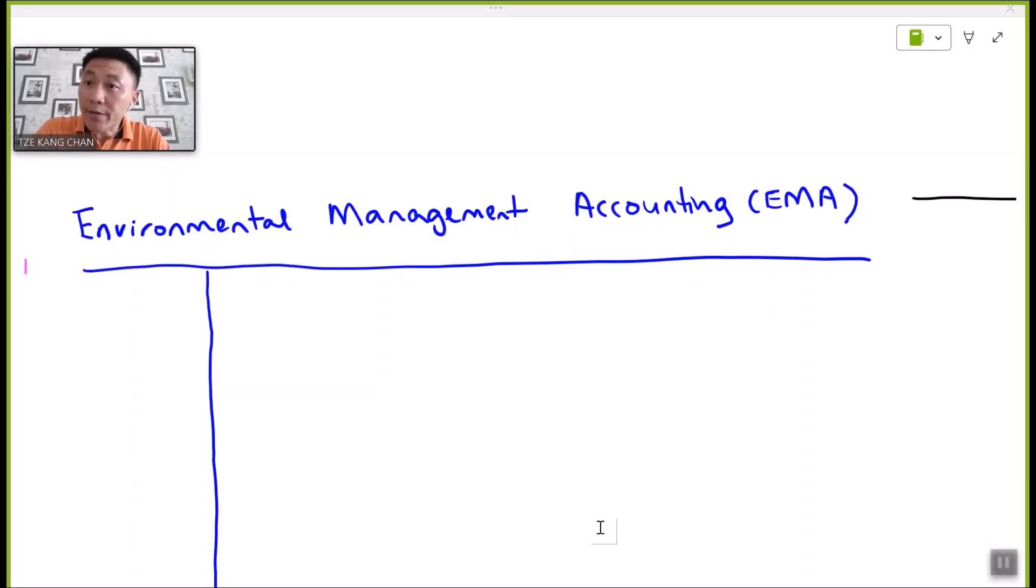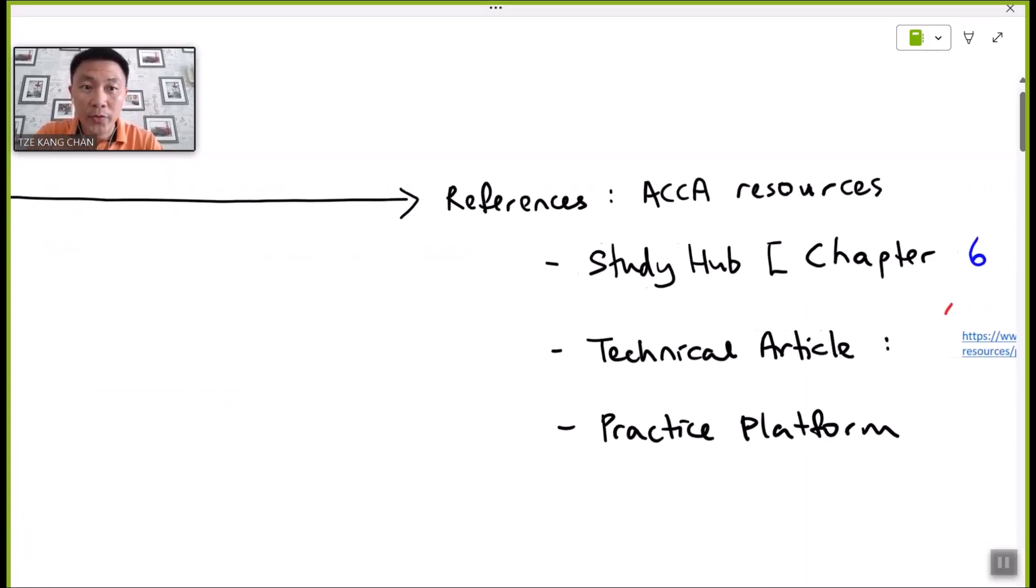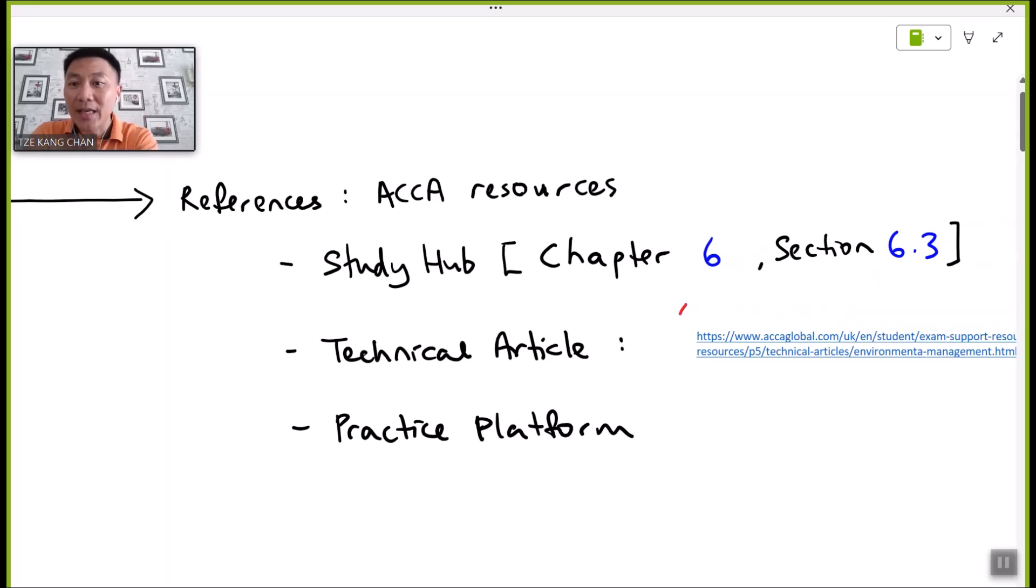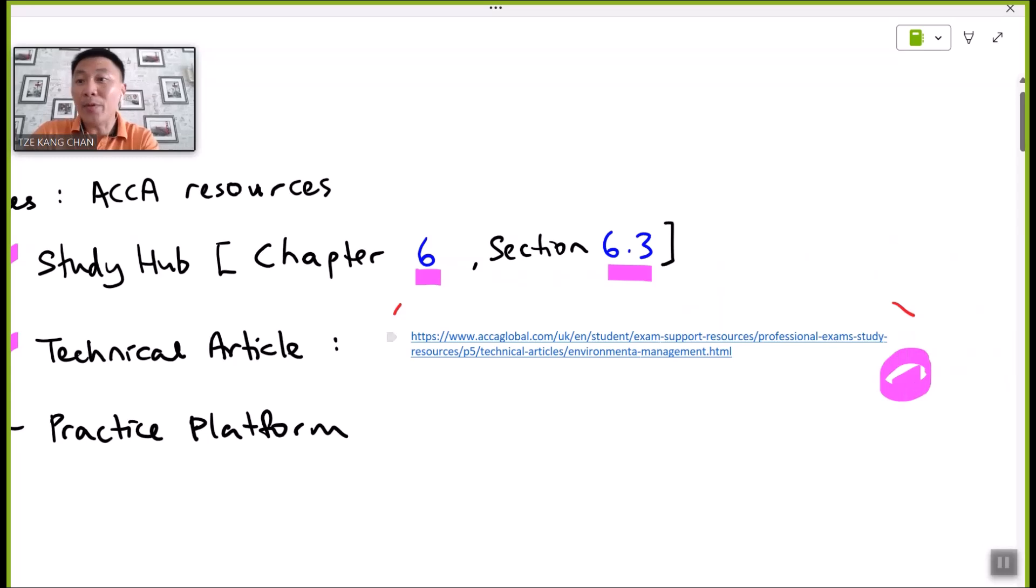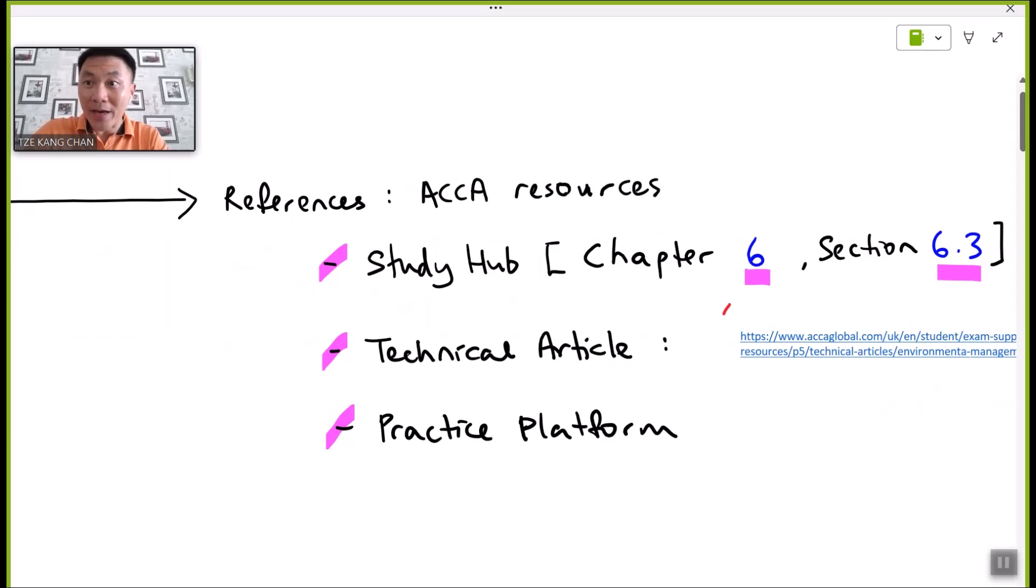The discussions of these topics will make reference to the official websites of ACCA, including Study Hub Chapter 6 Section 6.3, Technical Articles, which students can access through the website links. There are also ranges of questions in recent examinations from the practice platform pertaining to environmental management accounting, and you are required to attempt the questions before looking at the model answers.